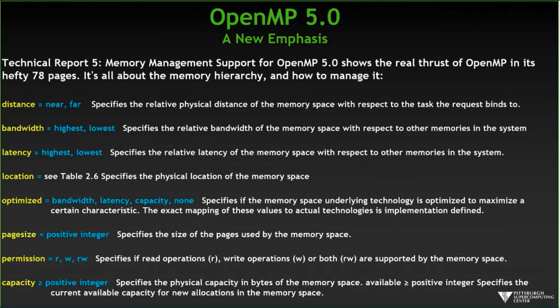OpenMP 5 is now obsessed with specifying where data sits in various memory hierarchies. It acknowledges that modern machines have different memory spaces: from SSDs to RAM to different cache levels to high-bandwidth memories used in GPUs and accelerators. Moving data around is typically the most expensive thing in your code anymore — the slowest part, consuming the most energy, is not the floating-point unit but moving data back and forth from memory to cache to registers and back. Optimizing that and making your code aware of it is what OpenMP 5 is focused on.